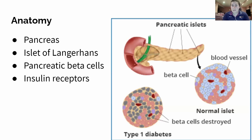The big thing going on here is the pancreas. The pancreas has islets of Langerhans, which is where the pancreatic beta cells are located. We're also dealing with the insulin receptors — that's another thing, but this is the basic anatomy we're going to be dealing with for type 1 diabetes.